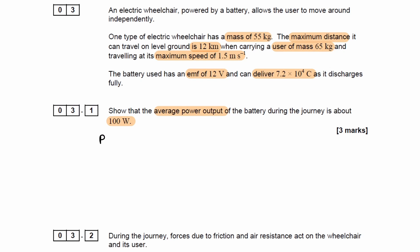So we can think about power as work done over time. We have voltage and charge, so we can get the work done from that. Work done equals QV. But we don't have time, so we'll have to work that out using the distance and the maximum speed.